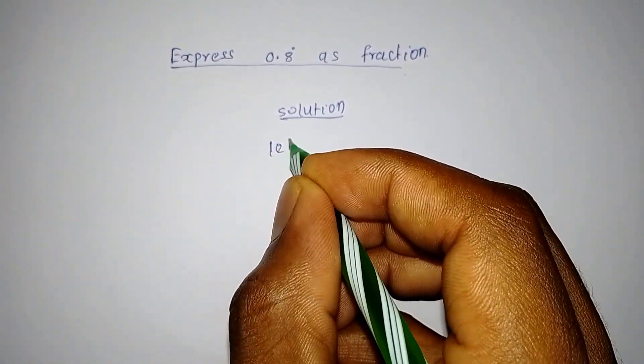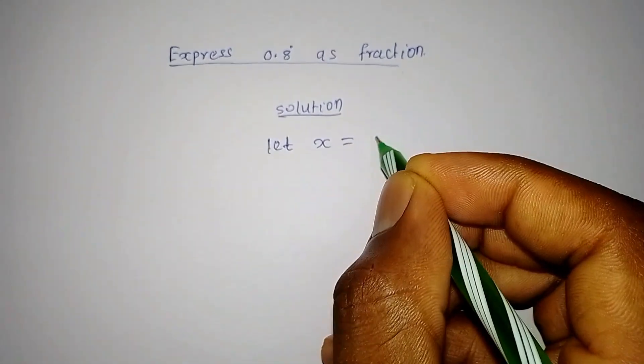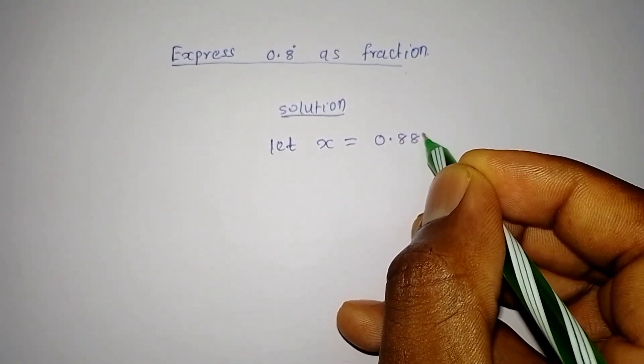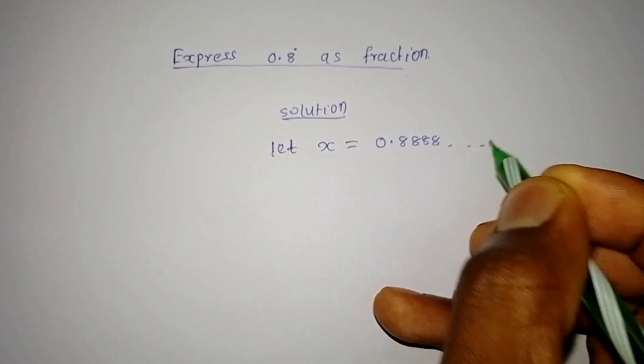Solution: let x be 0.8888, where 8 is recurring.